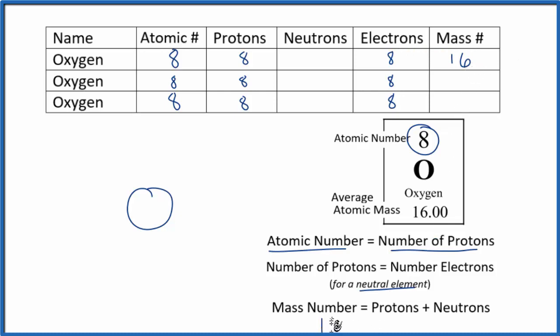Then if we know that it's 16, that equals protons, which we said that's 8, plus neutrons, which we don't know. Something plus 8 equals 16, 8 neutrons. So for this isotope of oxygen, we have 8 neutrons, gives us a mass number of 16, we call it oxygen-16.